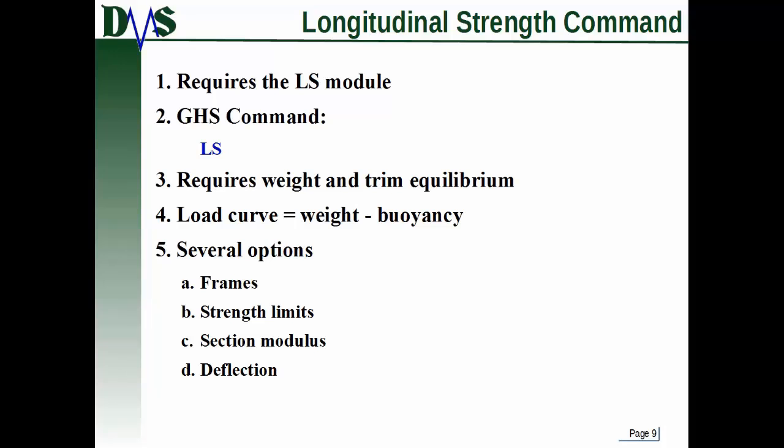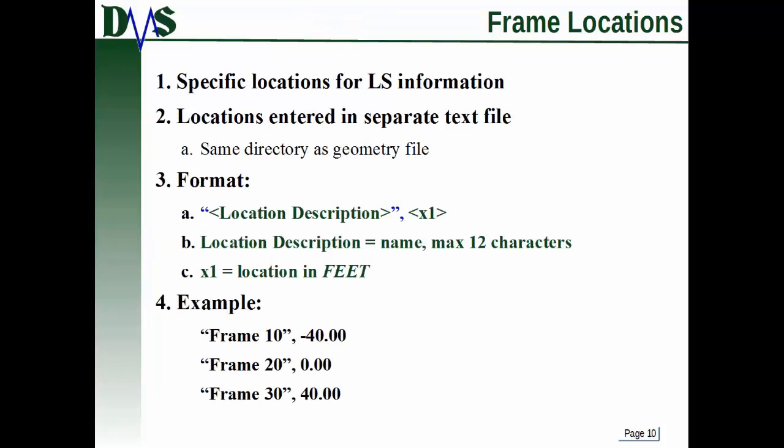And there are several different options for details of information to pull out from the LS command. So basic LS has several modifiers that we can add on. And I'll talk a little bit about some of those now. And then I'll talk more about them in the next tutorial. But some of those options, you can specify frame locations. You can specify strength limits. This is usually something that comes from your regulations. You can specify the section modulus of your hull. You can even use that to get the information about deflection of your hull. So lots of information that you can get out from that simple little LS command.